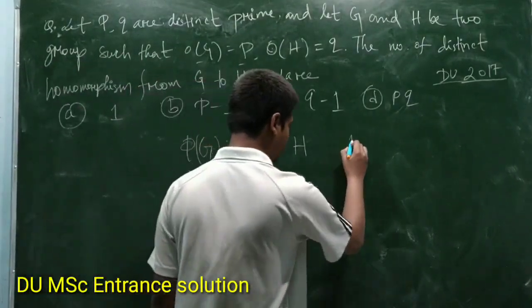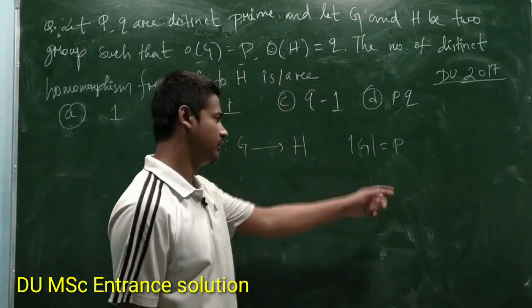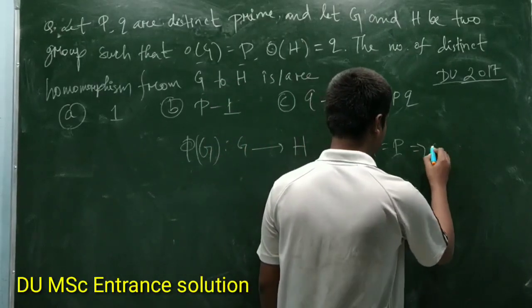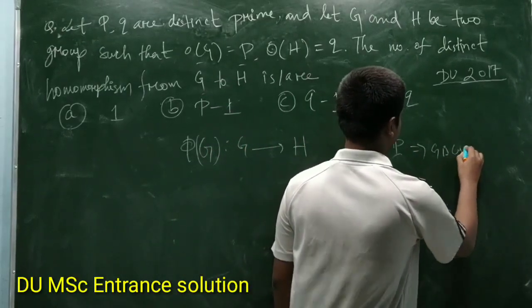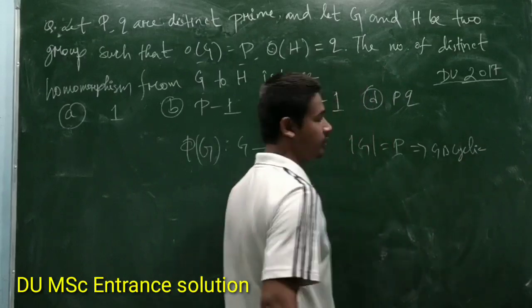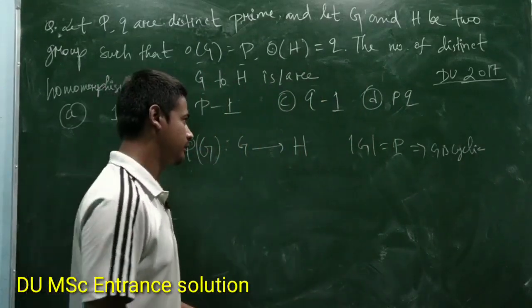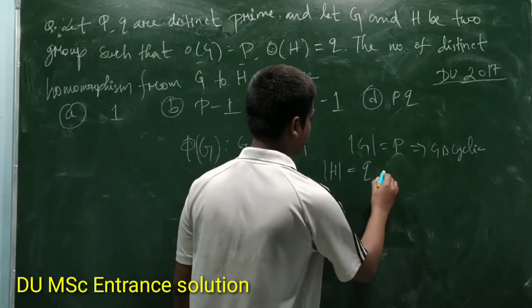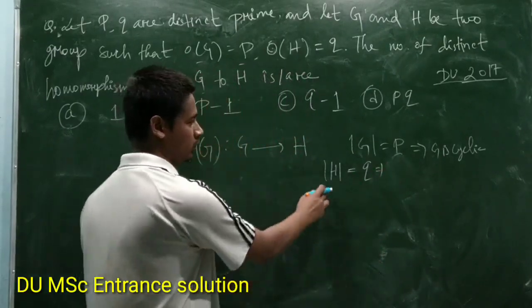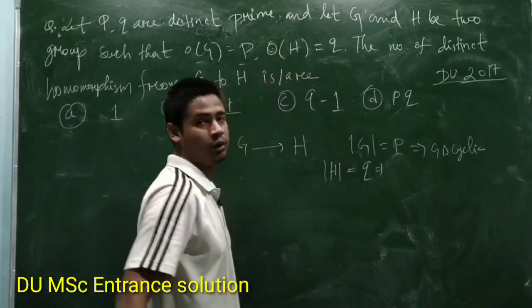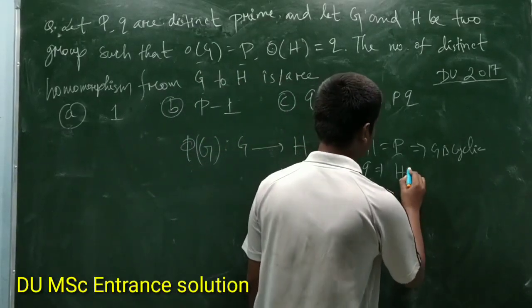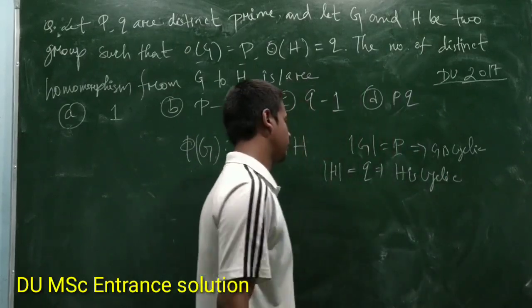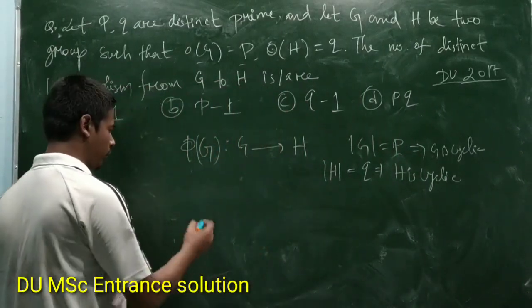Now see, given order of G is P which is prime, so G is cyclic because every prime order group is cyclic. Similarly, order of H is given as Q, so Q is also prime, so H is also cyclic.